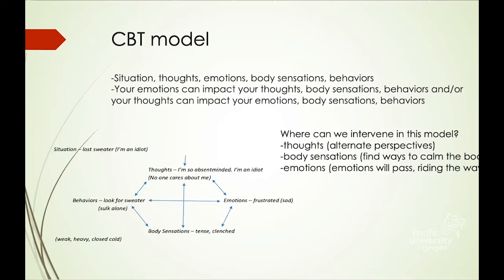The idea is that your emotions can impact your thoughts, body sensations, and behaviors — or your thoughts can impact these as well. So we have several areas where we can intervene in this model. In the thought area, we can intervene by thinking of alternate perspectives. Instead of thinking 'I'm an idiot' or 'no one cares about me,' I could replace that with an alternate perspective like 'I made a mistake, mistakes happen, it's been a long time since I've lost something like this.'